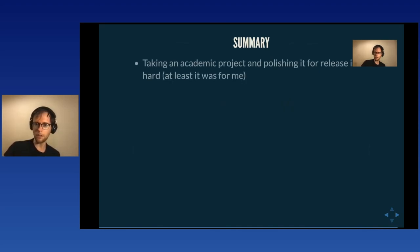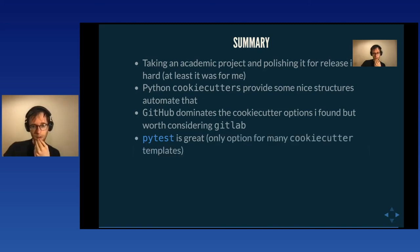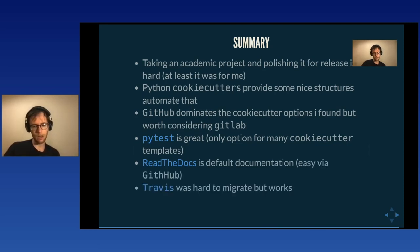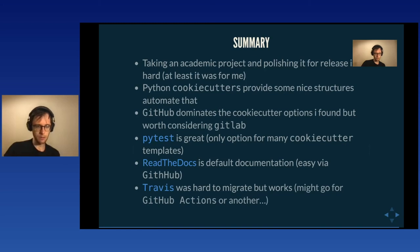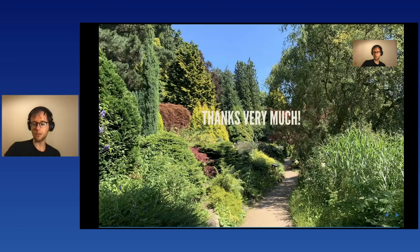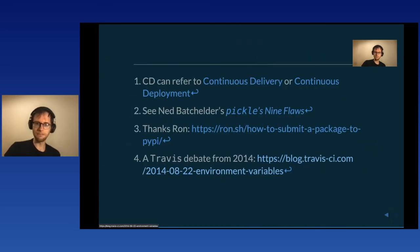Taking an academic project and polishing it for release is really hard, at least for me. Python cookie cutters were essential — I don't know what I'd be doing without that. GitHub dominates the cookie cutter options but it's worth considering GitLab at least. PyTest is great — the only option for many cookie cutter templates. Read the Docs is the default documentation system and it's really easy to get going. Travis was hard with that whole migration thing but it still seems to be working. GitHub Actions is another option and I'll probably go for one of the more extensive cookie cutters in the future. Thank you so much for your time.